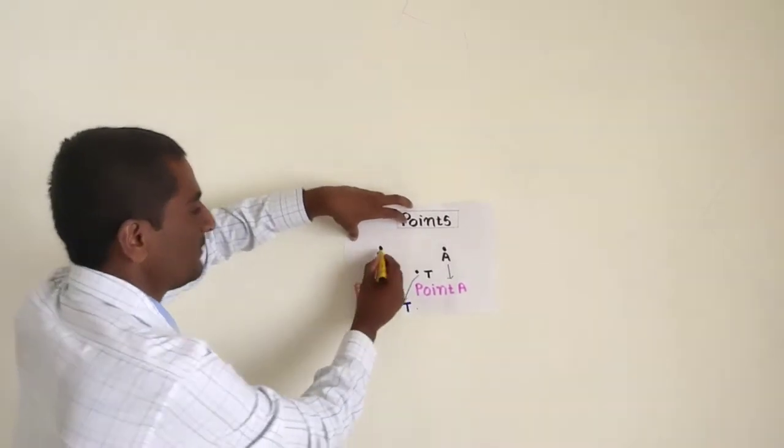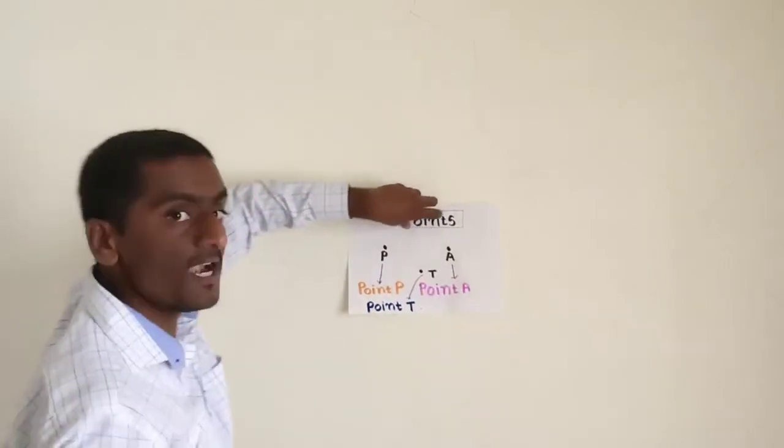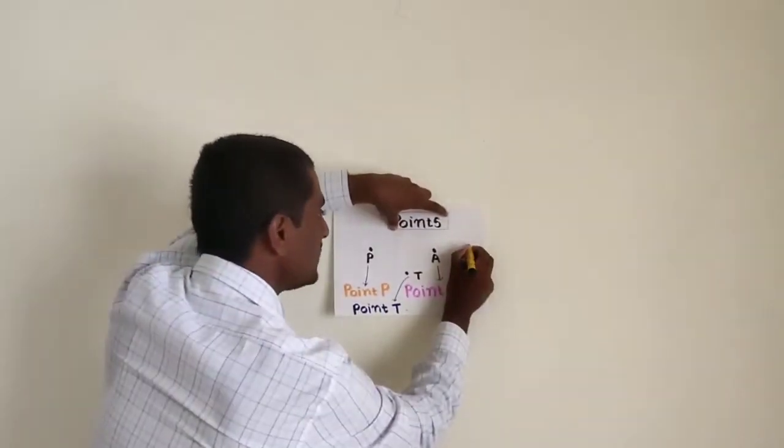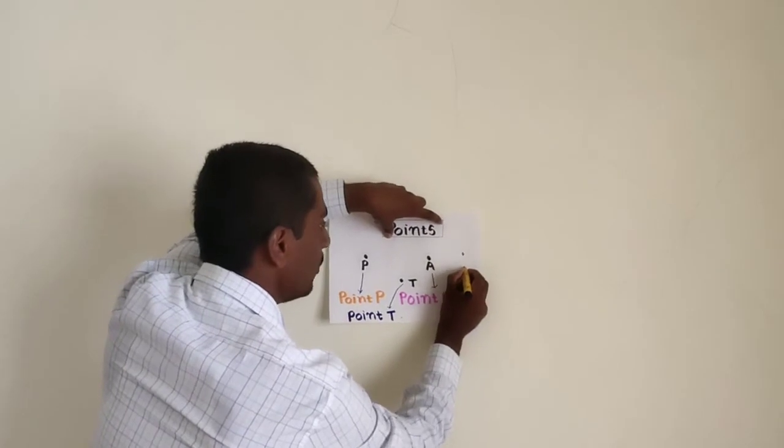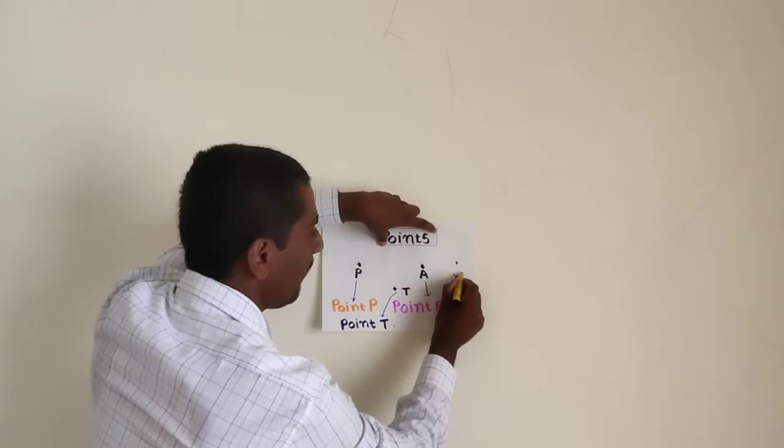See, here is point P, point T, point A. And remember that point is drawn as this type, not as this type. This is wrong method of drawing point.